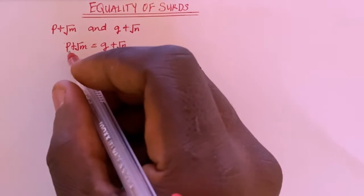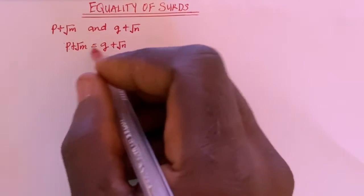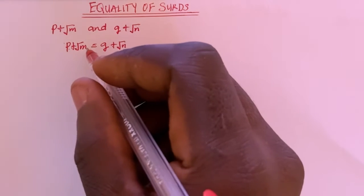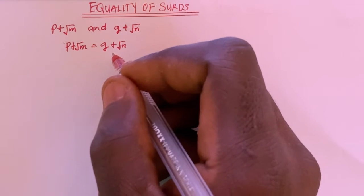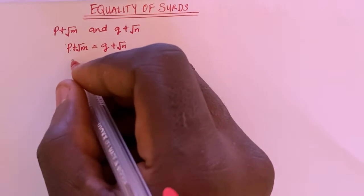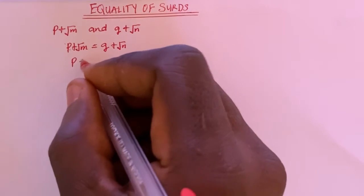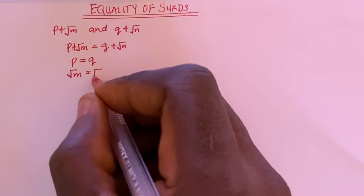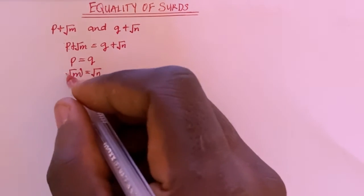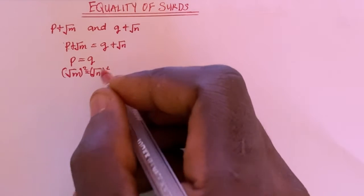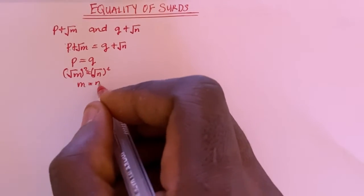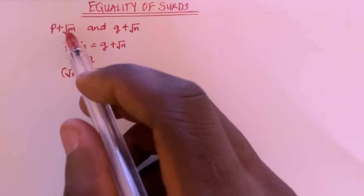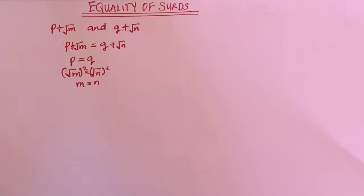Those that are rational, pack them together, and those that are irrational, pack them together. So in this case I'm going to have P equals Q, and here I'm going to have root of M equals root of N. I can square both sides of this, so that I'm going to have M equals N. This is the condition that must be satisfied for these expressions to be equal to one another.